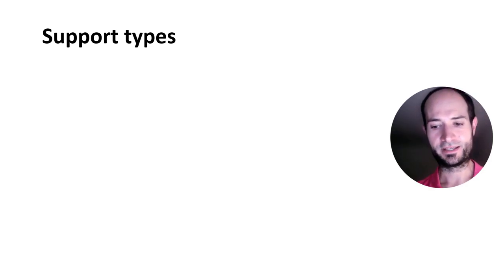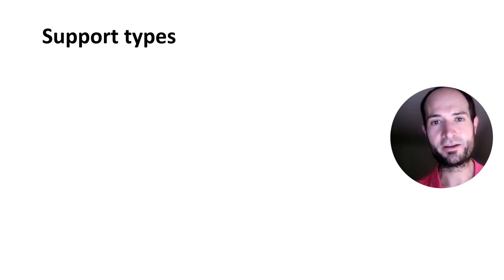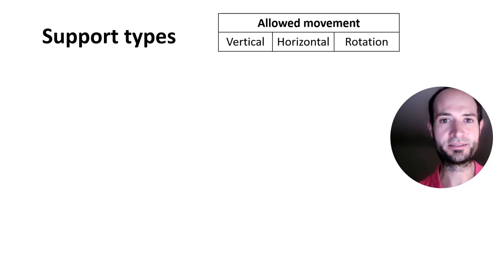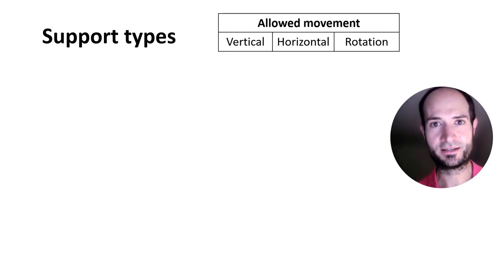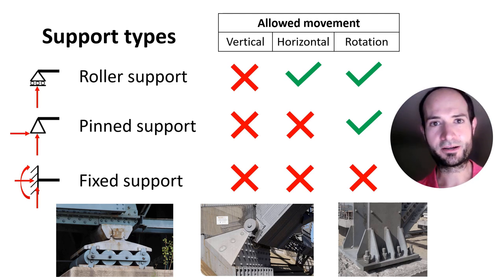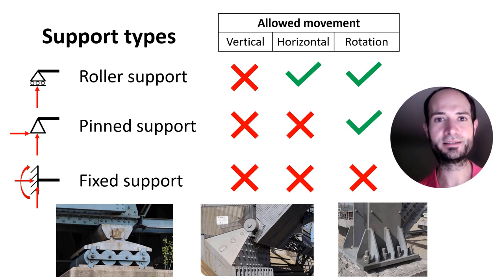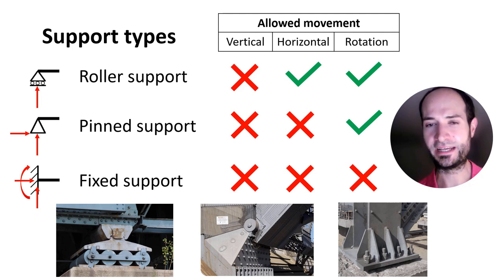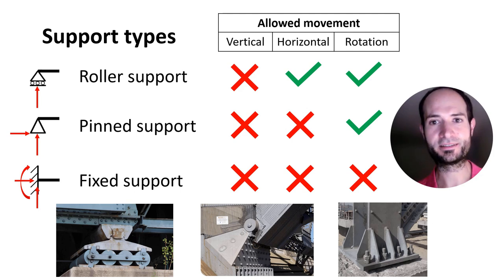We talked about supports last week. We saw the main three types. They depend according to the restrictions for vertical, horizontal movement, or rotation. We have the roller — it only prevents vertical movement, therefore you will have one reaction. The pin support doesn't allow any horizontal or vertical movement, therefore we will have two reactions. And then the fixed support doesn't allow any movement, therefore we will have a vertical reaction, horizontal reaction, and a moment to prevent rotation.